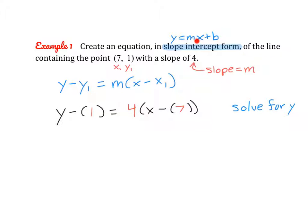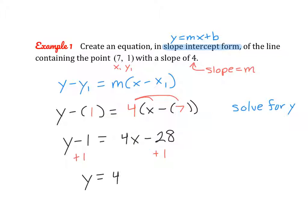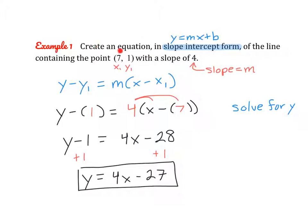We need our equation to say y equals something. First, distribute the 4 to both x and negative 7: y minus 1 equals 4x plus (4 times negative 7), which is negative 28. Then, since we are solving for y, we add 1 to both sides using the inverse operation, and we get y equals 4x minus 27. Negative 28 plus 1 is negative 27. So this is the equation in slope-intercept form, achieved by starting with point-slope form since we were given a point and the slope.